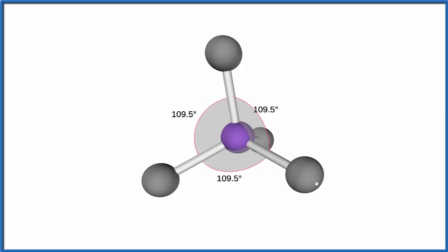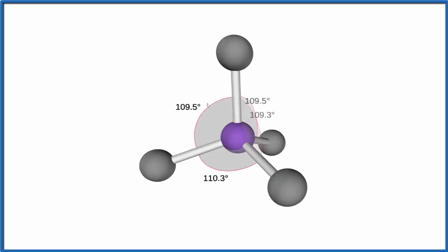And with the tetrahedral molecular geometry, the bond angles are 109.5 degrees. Again, because we have hydrogens and chlorines, they're different. This will be a little bit different, this angle here, but the general pattern is 109.5.